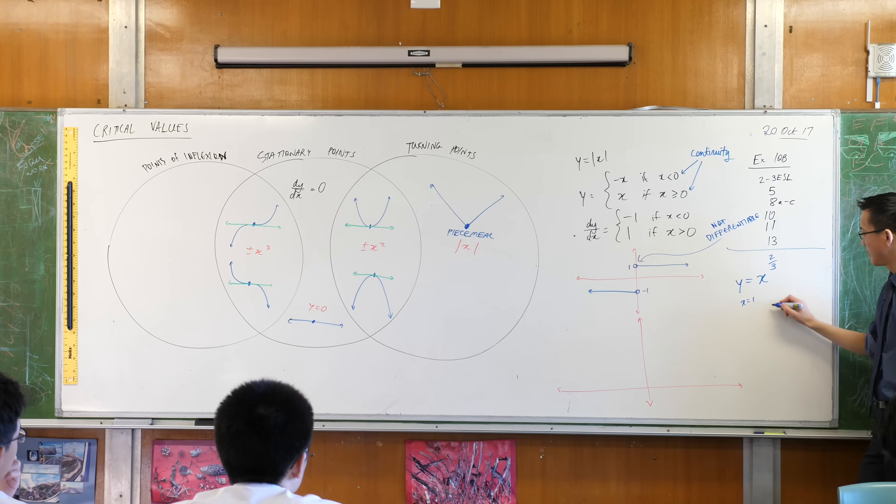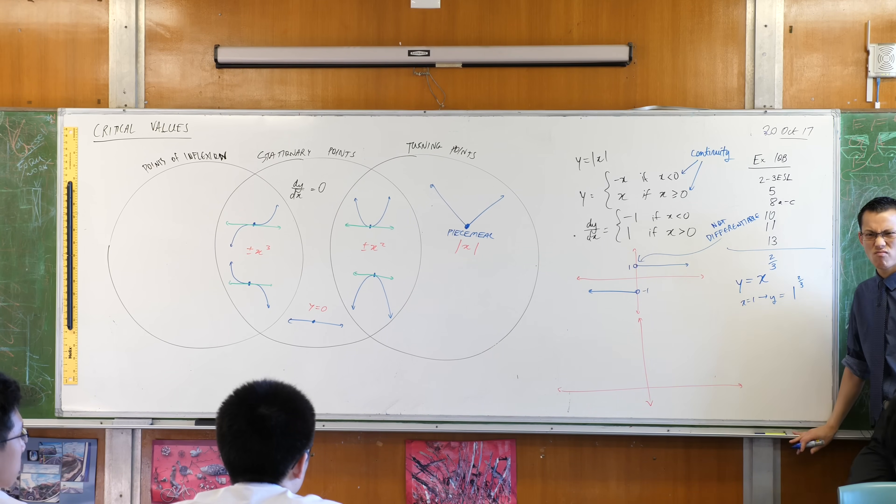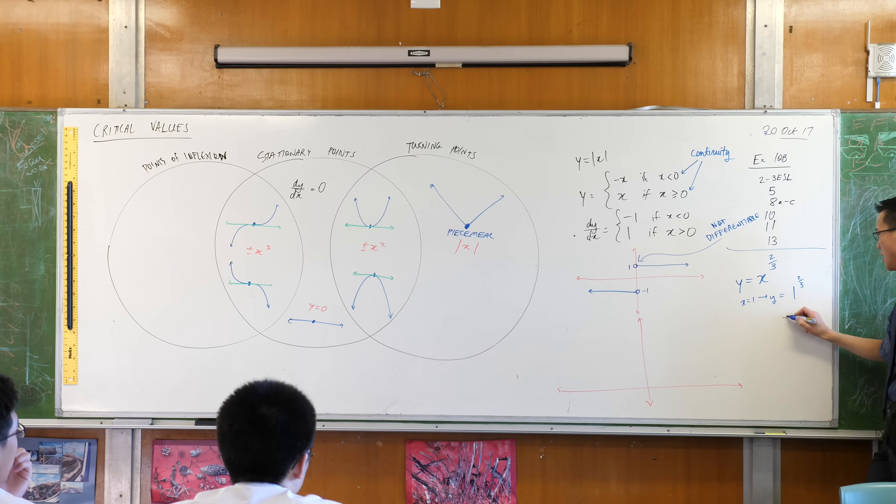If x equals 1, then y equals 1 to the power of two-thirds. What's that mean? Well, what is the power of two-thirds anyway? Well, you could say it a couple of different ways. One of the ways you could say it is it's the cube root of 1 squared.